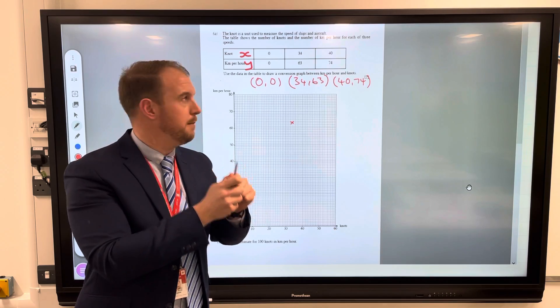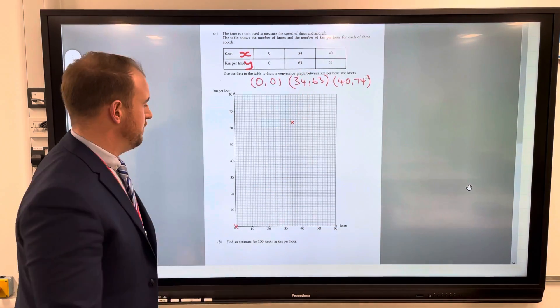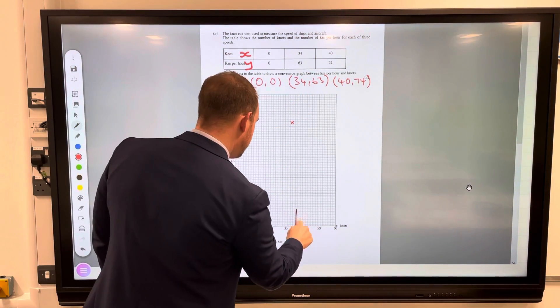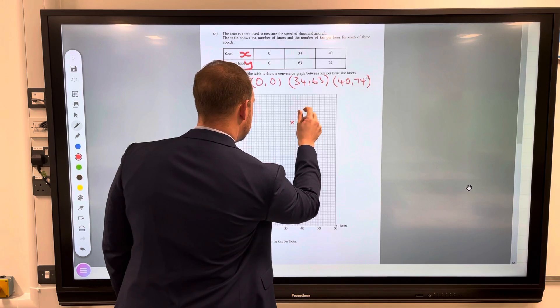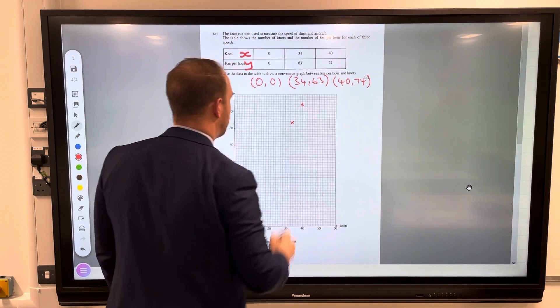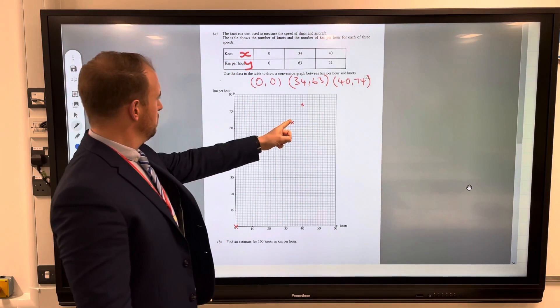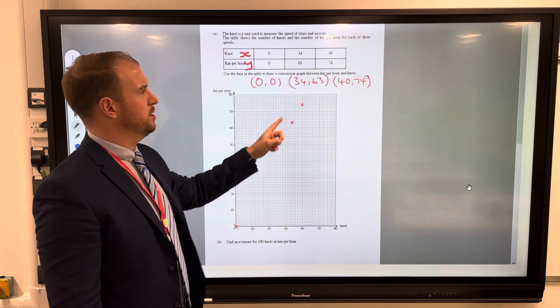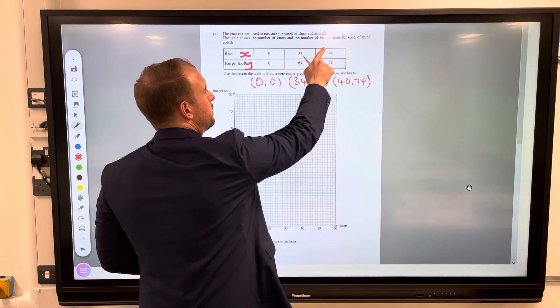And then 40, 74. So across to 40, up to 74. Well there's a big gap between those and those are quite close to each other, but we know that because this is 34 and that is 40. So we have done it correctly.